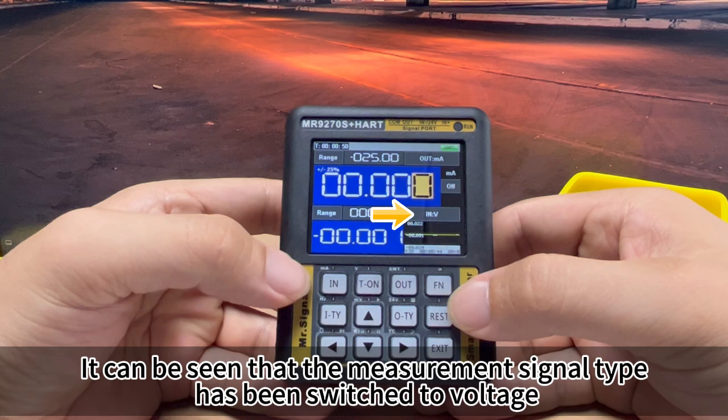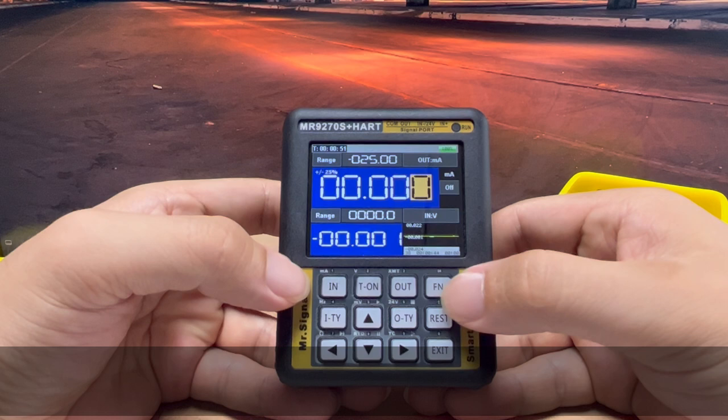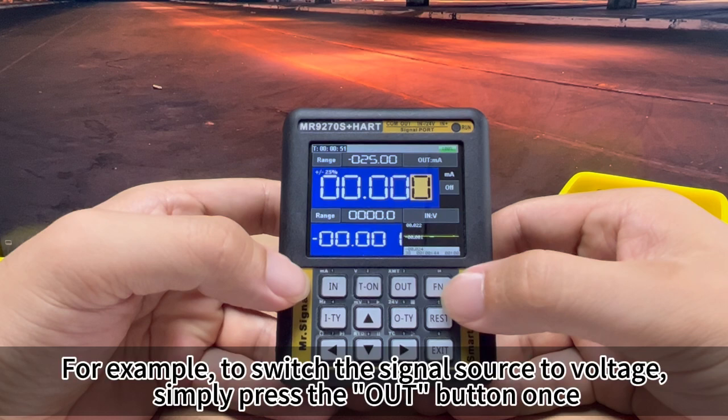It can be seen that the measurement signal type has been switched to voltage. For example, to switch the signal source to voltage, simply press the out button once.